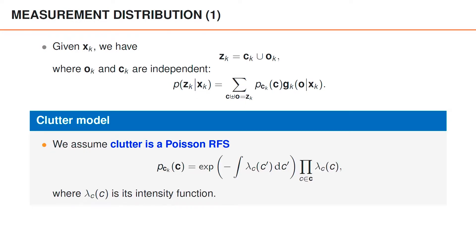We assume that the clutter is a Poisson point process with intensity function lambda z. To evaluate the Poisson point process PDF for a set c, we take e to the power of minus the integral over lambda z, where the integral is also known as the Poisson rate lambda z bar, times a product of the intensity function lambda z for all the elements in the set c. We have now obtained an expression for the measurement model that we know how to compute.